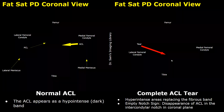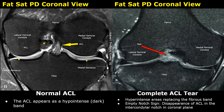This is a fat-saturated proton density weighted image in coronal plane. We can see the normal ACL — this fibrous band is the ACL. In case of a complete ACL tear, this region will be filled with hyperintense areas. This disappearance is called the empty notch sign, which refers to disappearance of the ACL in the intercondylar notch in coronal plane.